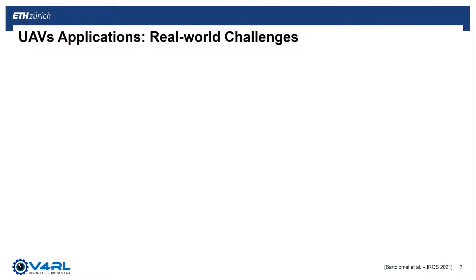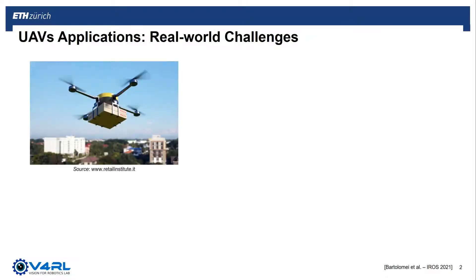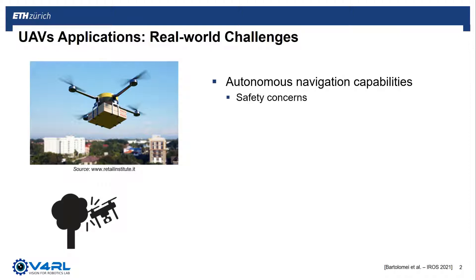Nowadays, robots such as unmanned aerial vehicles are more and more used in a variety of applications, such as drone delivery. Tons of research has been carried out in order to increase the capacity of these platforms to navigate autonomously. However, safety still remains a big challenge, as the integrity of both the platform and the surroundings has to be maintained. Plus, accurate and robust pose estimation are another vital component in order to succeed in a mission.